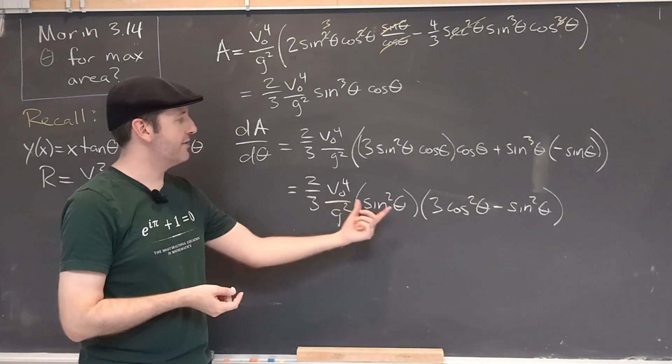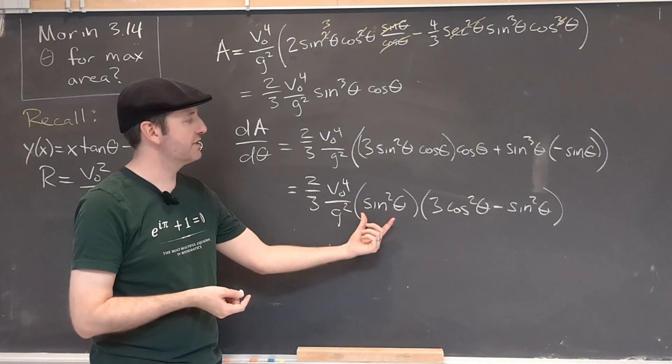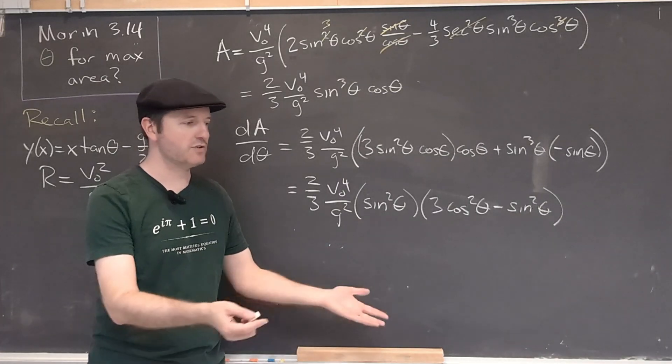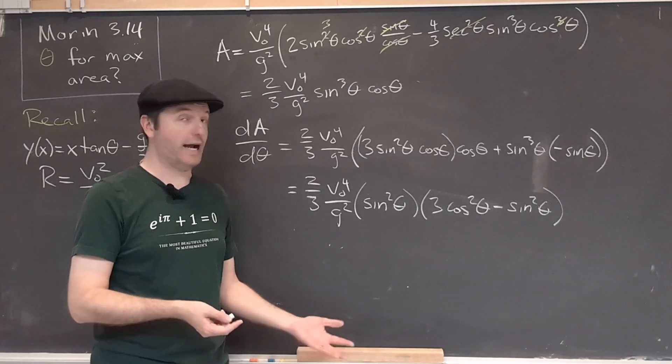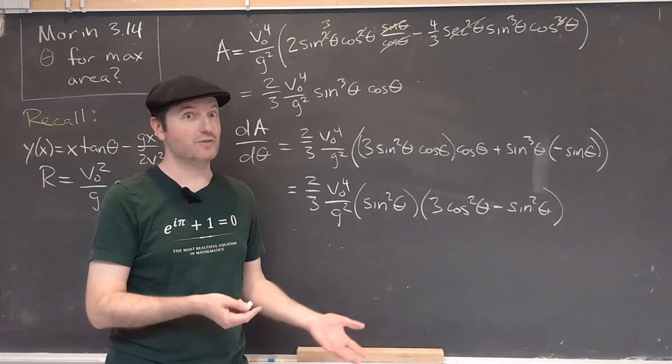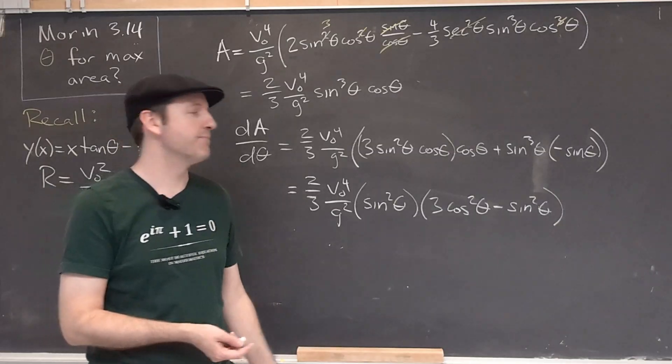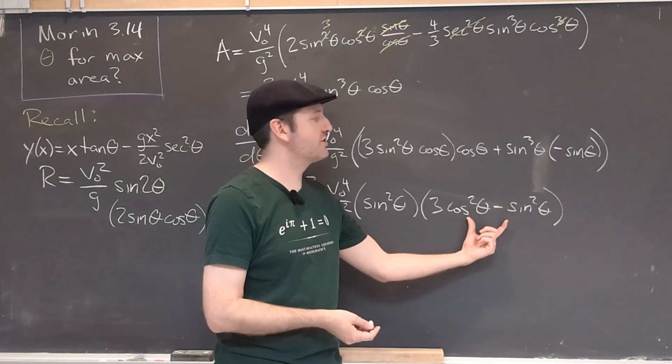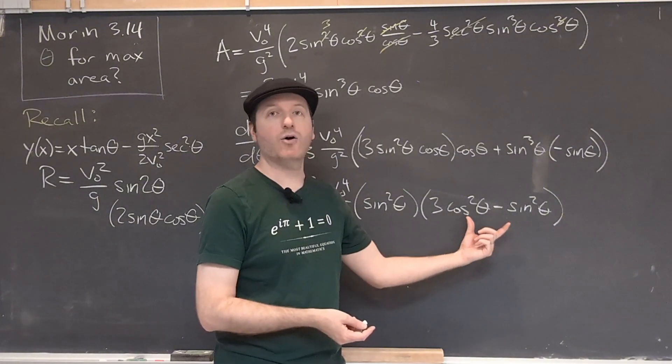To do that, either sine squared has to be 0, which gives us θ equals 0 or θ equals π. That means my trajectory has 0 area. So that does extremize it with the number 0. That minimizes it. What we want to do is maximize it, though. So it must be the case that this term here is our 0.